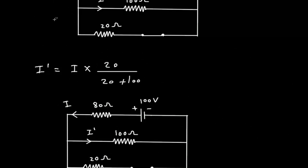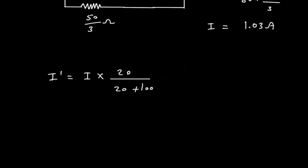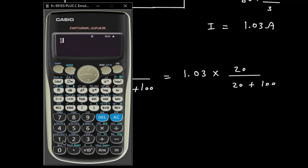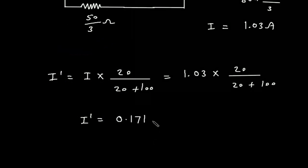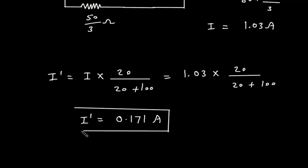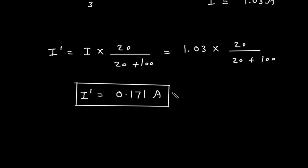So I' is equal to I into 20 divided by 20 plus 100. This is 1.03 into 20 divided by 120, therefore I prime is equal to 0.171 ampere. The direction of this I prime is rightward.